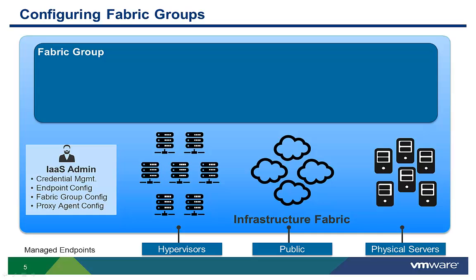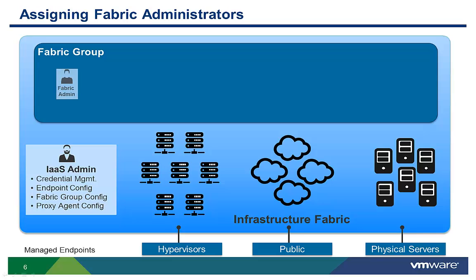After discovery, the next step in the infrastructure fabric organization process is to aggregate resources into one or more fabric groups. Many companies that have a single tenant and multiple business groups sharing resources will only need a single fabric group. A fabric group needs one or more administrators who will be responsible for managing the resources of that fabric group. This could be the same person as the infrastructure administrator, but there is enough role granularity to allow separation of responsibilities if needed.